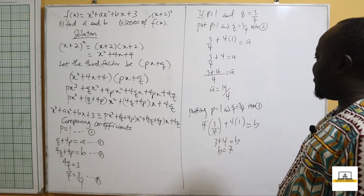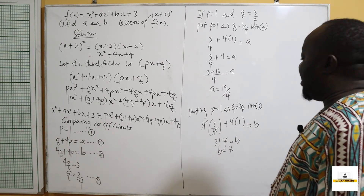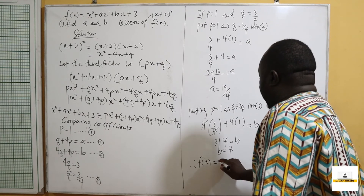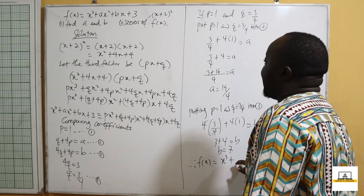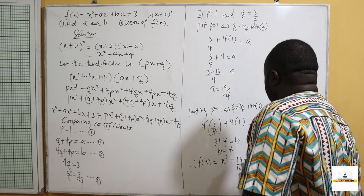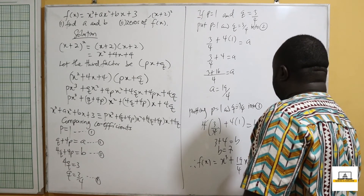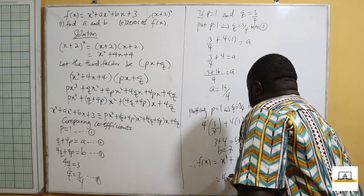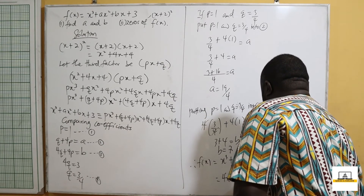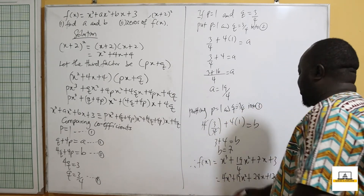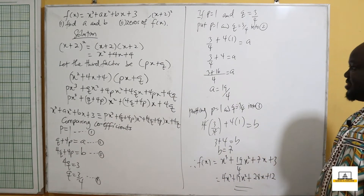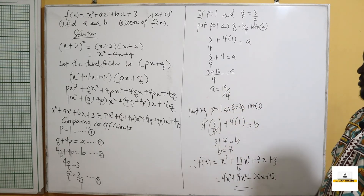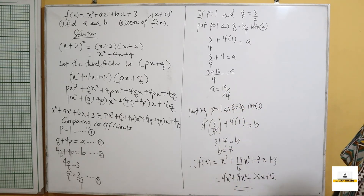So this means that a is equal to 19 over 4 and b is equal to 7. Therefore our f of x will be equal to x cubed plus 19 over 4 x squared plus 7x plus 3, which when multiplied by 4 gives us 4x cubed plus 19x squared plus 28x plus 12. We have found the values of a and b.